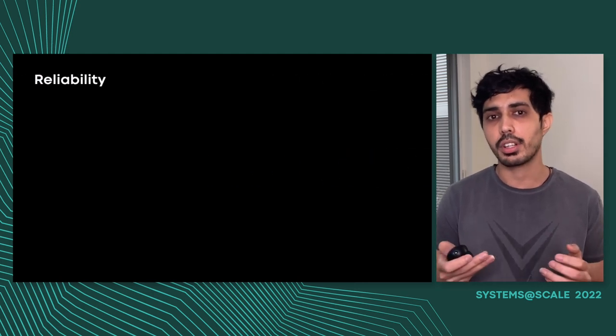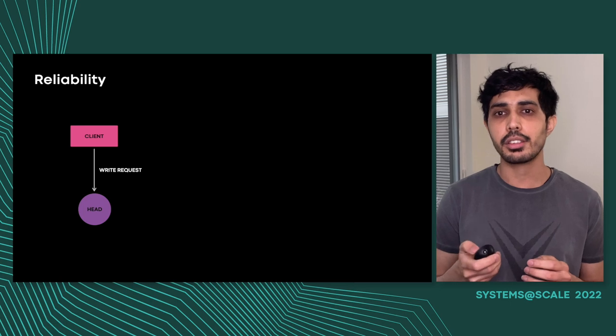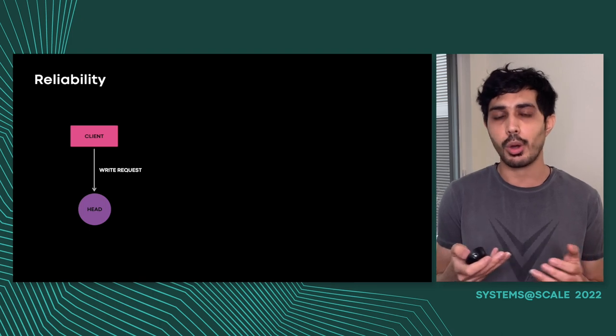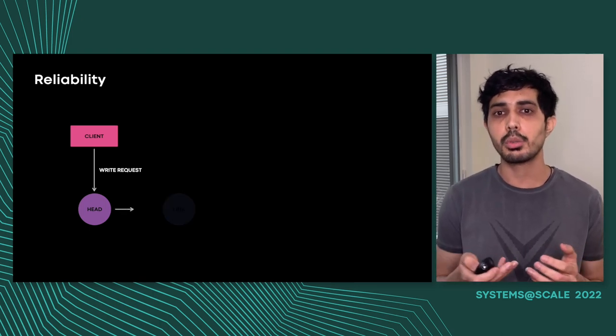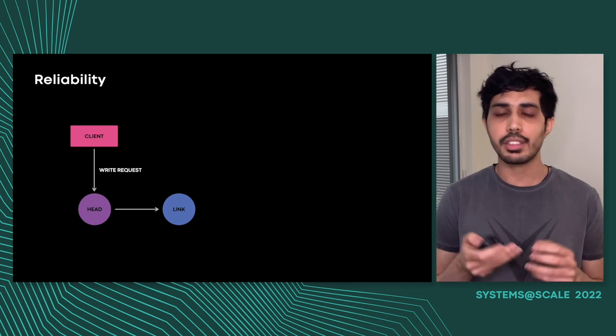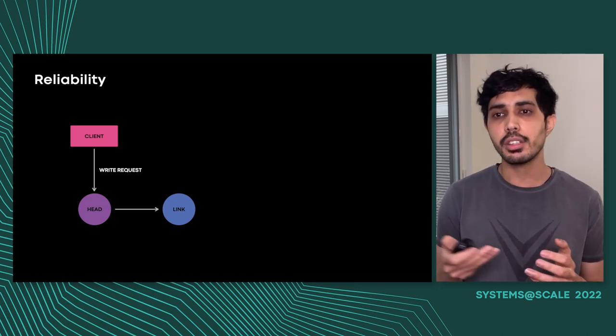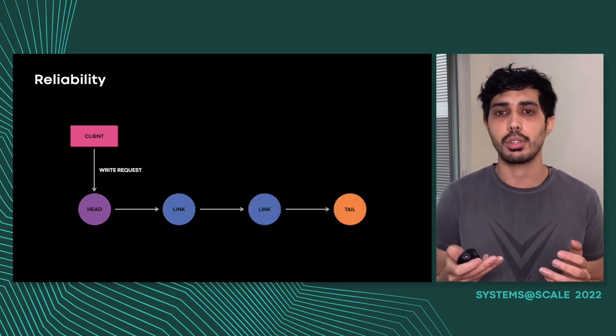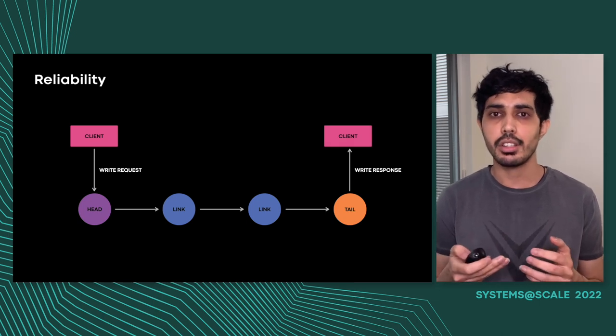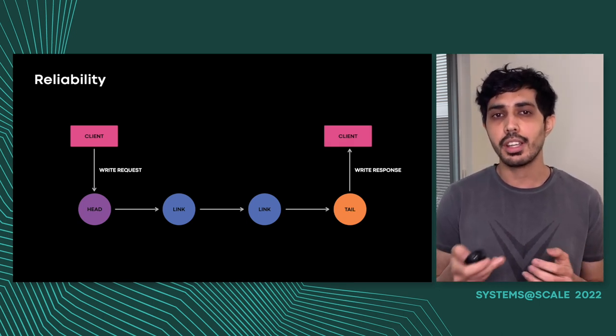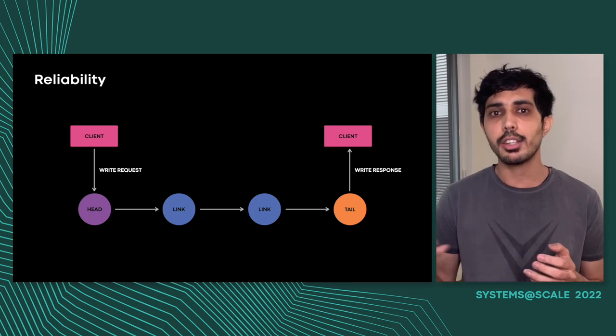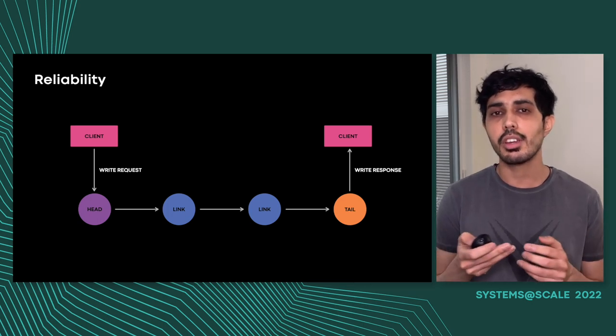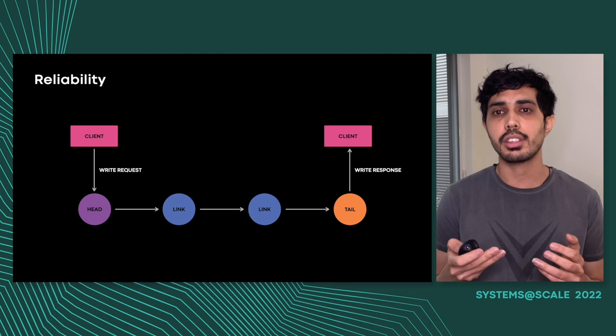Let's talk about how writes work in chain replication. All client writes are directed to the head of the chain. The head processes the write, essentially storing it on its local media and forwards the update to the next node in the chain. The second node does the same and forwards the update further down the chain. The request completes only after the tail has persisted the data successfully. That means that if a client receives a success for writing a particular object, then that object is guaranteed to be present on all links in the chain. This is in contrast to quorum-based replication systems, where writes were acknowledged after majority servers had committed the write.